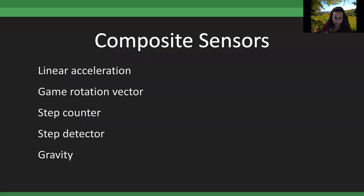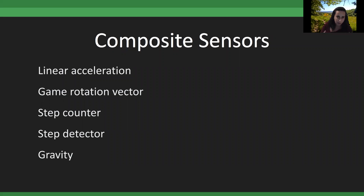One example of a composite sensor is linear acceleration. You might remember 9.8 m/s² — this confuses a lot of developers because some phones read out 9.8 m/s² for objects at rest with respect to Earth, while some read out g-force. Game rotation vector, step counters, and step detectors all use accelerometers and possibly gyroscopes — those are your composite sensors.